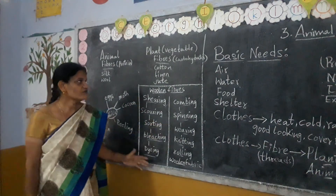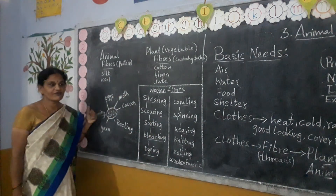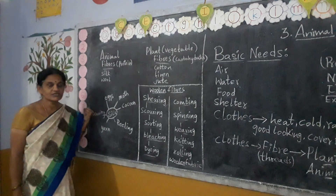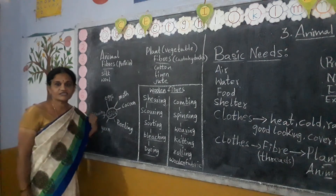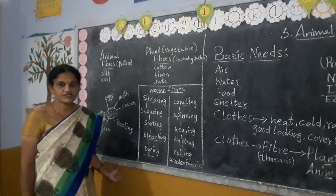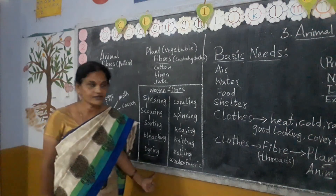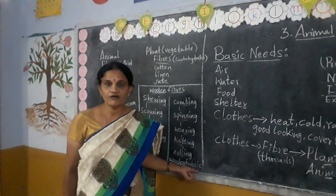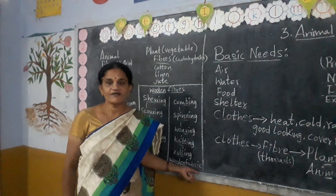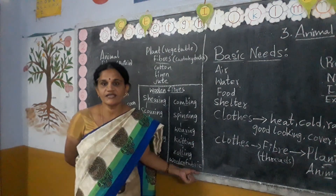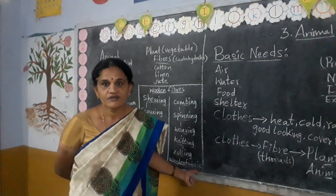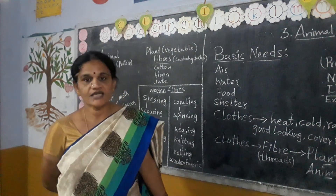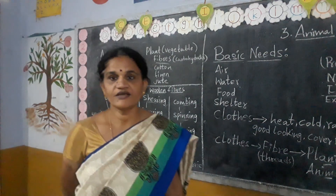So from plants and animals we get fibres. This is the simple introduction of the lesson. I will give you some more videos and explain the complete lesson. You have to understand well. Thank you.